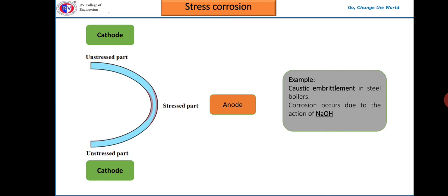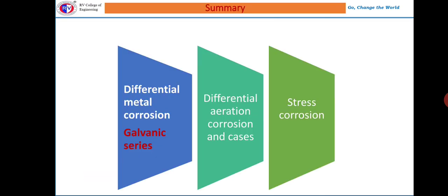Metal atoms under stress are always at higher energy levels compared to stress-free atoms. The stressed part of the metal acts as the anode whereas the stress-free part acts as the cathode, forming a corrosion cell. In a specific corrosive environment, the stressed part undergoes corrosion, initiating a crack, which then propagates through the metal due to continuously acting stress. One example is steel boilers, where corrosion occurs due to sodium hydroxide — differences in its concentration lead to a concentration cell and corrosion, known as caustic embrittlement in mild steel boilers.